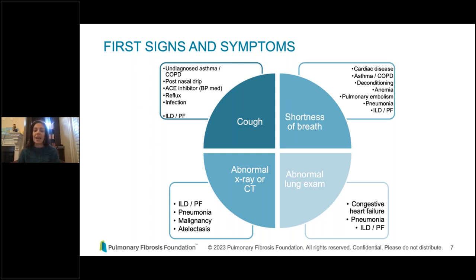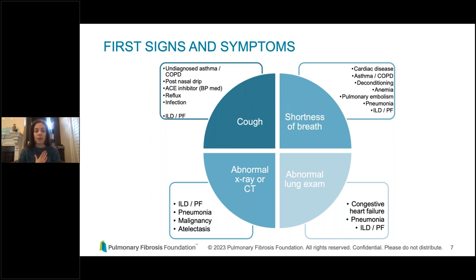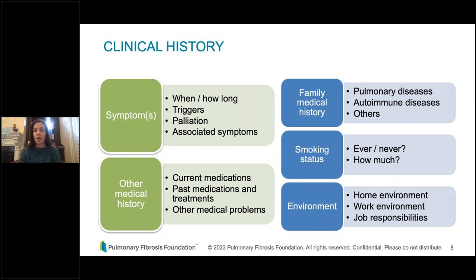Sometimes a patient has no symptoms but has an abnormal lung exam found incidentally during a routine checkup. Congestive heart failure and pneumonia can cause similar sounds to pulmonary fibrosis. We also do a lot of imaging on patients with risk factors — for example, lung cancer screening CTs in former smokers or cardiac imaging — and we can see evidence of interstitial lung disease on otherwise asymptomatic patients. But other conditions can cause those same abnormalities, making early diagnosis complex and potentially confusing.